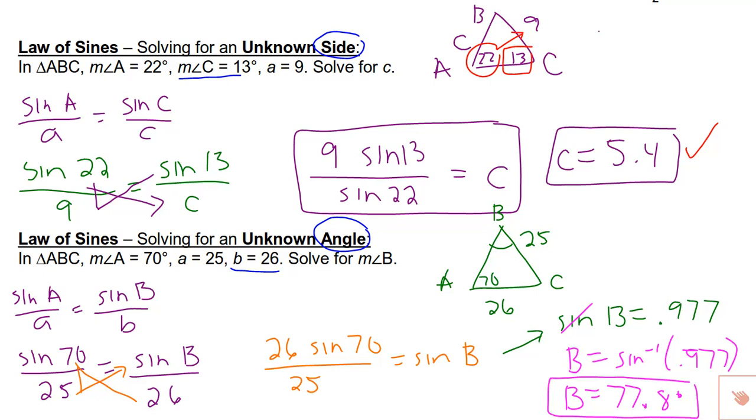Stop and make sure that that makes sense. Side b is a little bigger than side a. So it makes sense that angle B would be a little bigger than angle A. So that's logical.